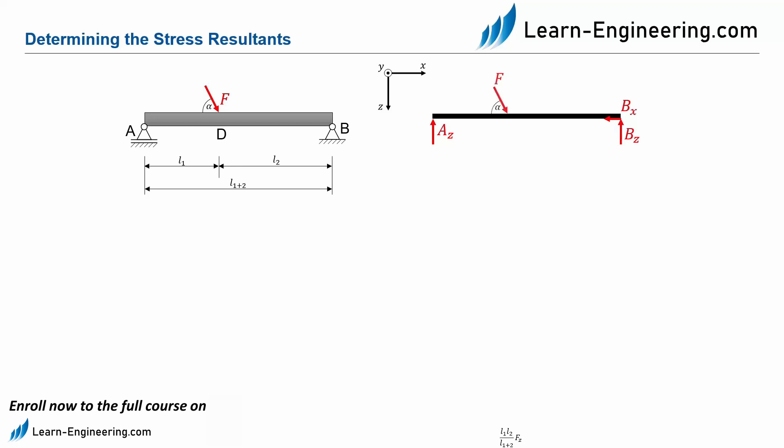Now we draw the force F. We can decompose this into a vertical component F times sine alpha equal to FZ and into a horizontal component F times cosine alpha equal to FX.